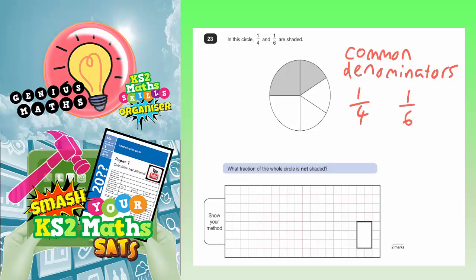Well you might be able to spot that they both go into 12. Four goes into 12 and six goes into 12. And then you can make two equivalent fractions out of 12.